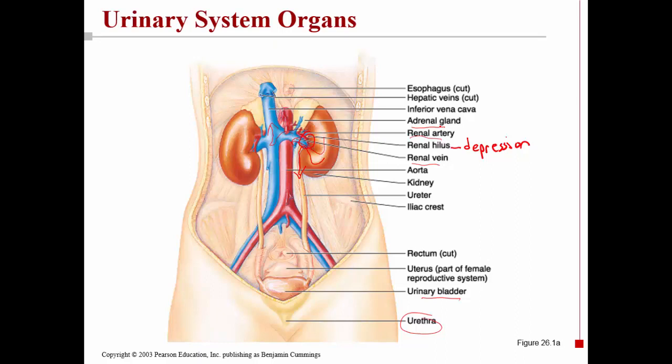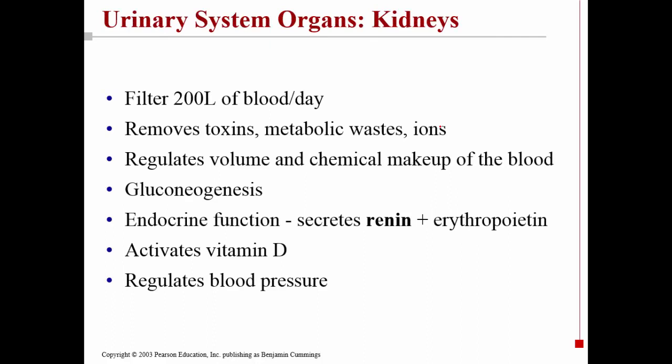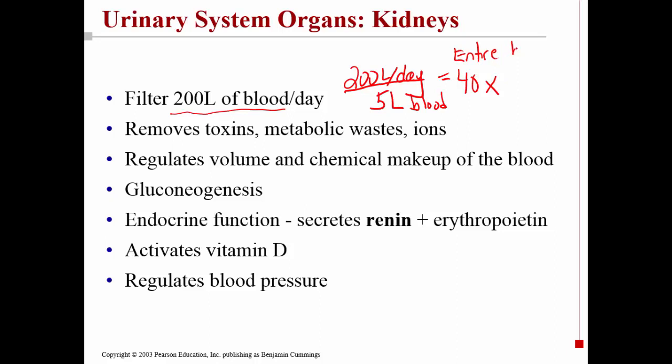The major organ is the kidney — it is the major excretory organ in the body, and its main job is to filter your blood. In fact, it filters about 200 liters of blood per day. An adult has about 5 liters of blood total, so if the kidneys are filtering 200 liters per day, this means that each day the entire blood volume is filtered 40 times.